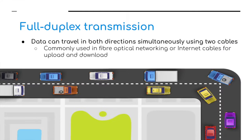Full duplex transmission is where data can travel simultaneously in both directions, using two cables. It is commonly used in fiber optic technology, networking, and internet cables for both upload and download.